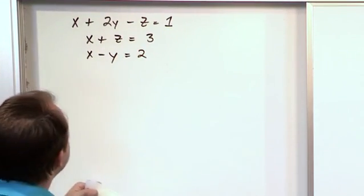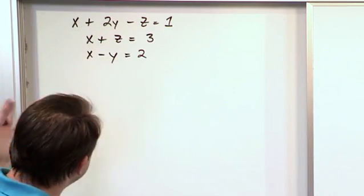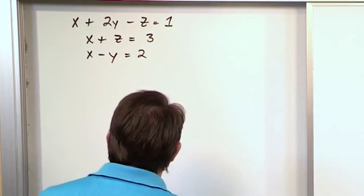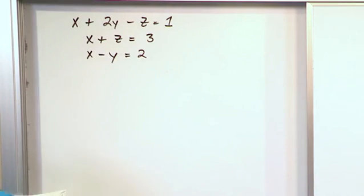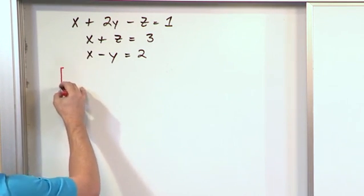Again, we have three variables, x, y, and z, and we have three equations. So because of that, we're reasonably hopeful that we'll be able to use row reduction to find a solution, but we won't know until we get to the end. So let's write this as an augmented matrix.